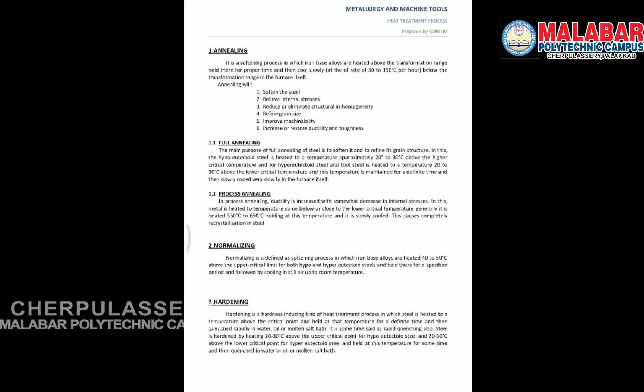The next process is normalizing. Like annealing, it is a softening process that improves mechanical properties. After cold working or hot working of metals, internal stresses are induced and mechanical properties change. Normalizing is done by heating the metal and then letting it cool in air.